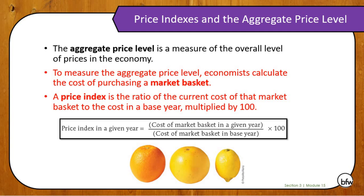A price index is the ratio of the current cost of that market basket to the cost in a base year, multiplied by 100. So to calculate the value of a price index in a given year, the price index in a given year equals the cost of a market basket in a given year divided by the cost of the market basket in a base year, multiplied by 100.